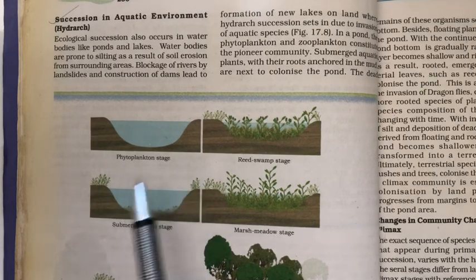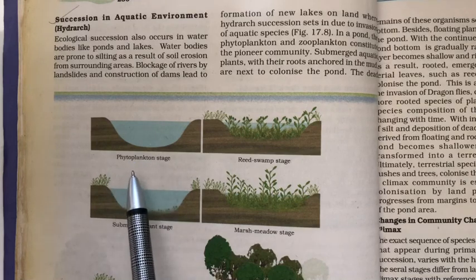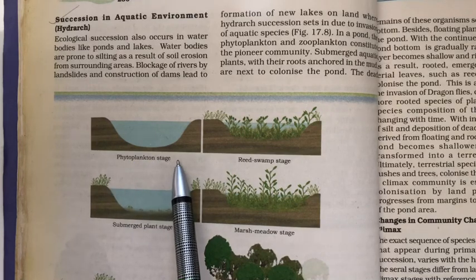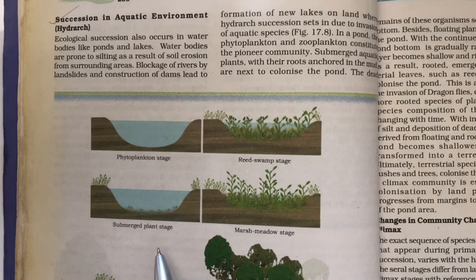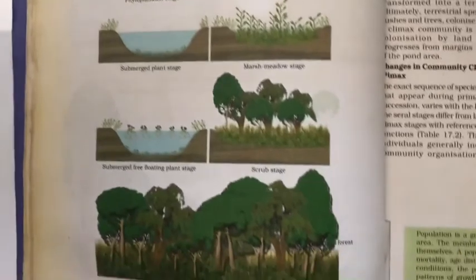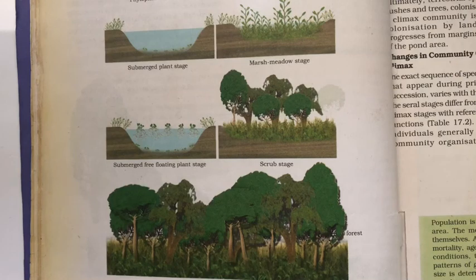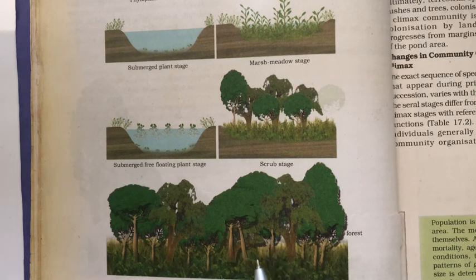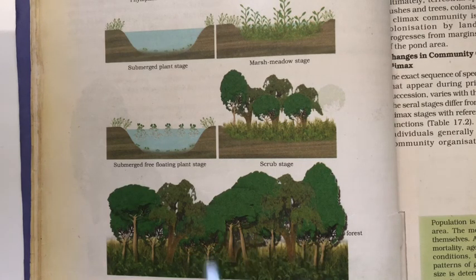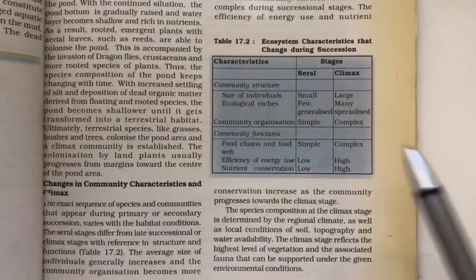Another type of succession is hydrarch, which occurs in an aquatic environment. It is initiated in a newly created water body. The stages are: phytoplankton stage (pioneer stage), submerged plant stage, submerged free-floating plant stage, reed swamp, marsh meadow, scrub, and finally a climax community.